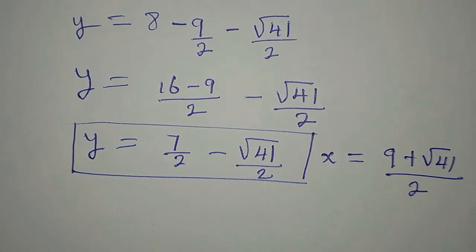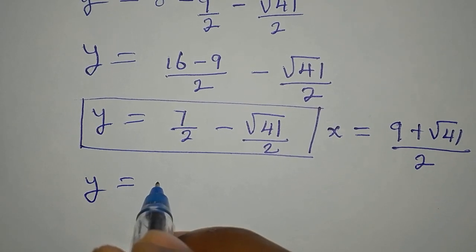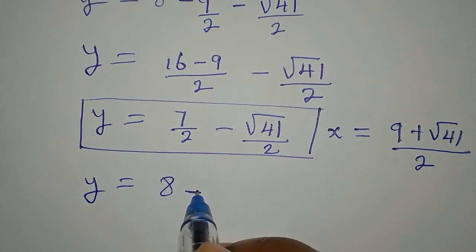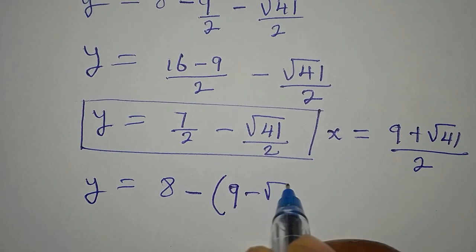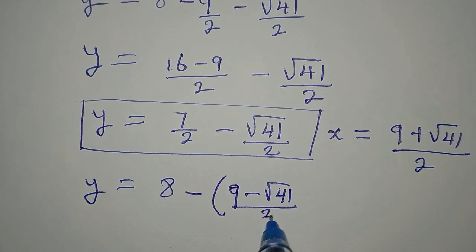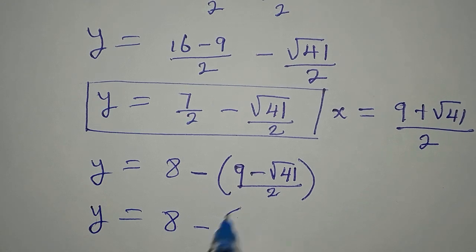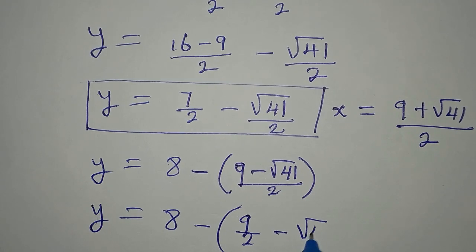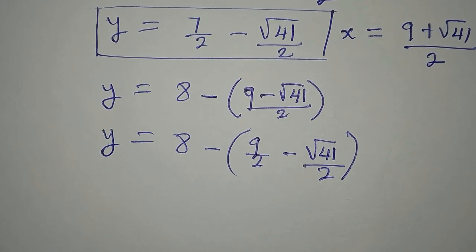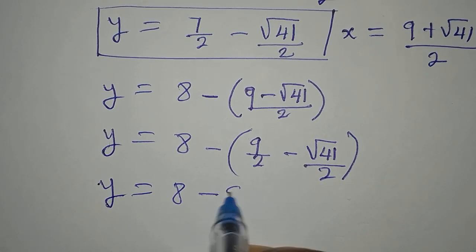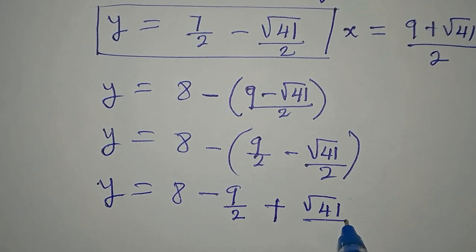Now the next value of y, y will be equal to 8 minus x. But the x becomes 9 minus square root of 41 over 2. You can simplify this so that y is 8 minus open bracket 9 over 2 minus square root of 41 over 2. Open the bracket so that y is 8 minus 9 over 2 plus square root of 41 over 2. I want to find the LCM of this first.